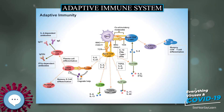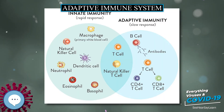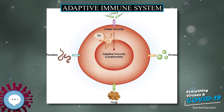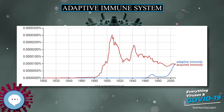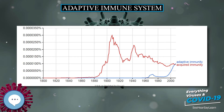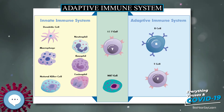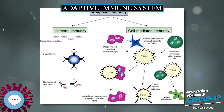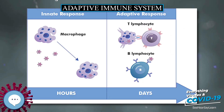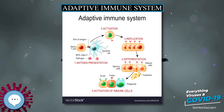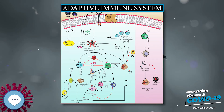Dendritic cells engulf exogenous pathogens such as bacteria, parasites, or toxins in the tissues, and then migrate, via chemotactic signals, to the T cell-enriched lymph nodes. During migration, dendritic cells undergo a process of maturation in which they lose most of their ability to engulf other pathogens, and develop an ability to communicate with T cells. The dendritic cell uses enzymes to chop the pathogen into smaller pieces called antigens. In the lymph node, the dendritic cell displays these non-self antigens on its surface by coupling them to a receptor called the major histocompatibility complex (MHC), also known in humans as human leukocyte antigen (HLA). This MHC-antigen complex is recognized by T cells passing through the lymph node.